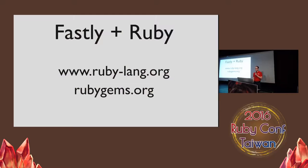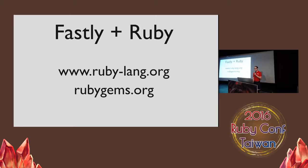Fastly supports many open source projects, including hosting the RubyLang website, downloads for Ruby, and all of your RubyGems. Last month, Fastly served 425 terabytes of data and 8 billion requests supporting RubyGems, all for free. I'd also like to highlight the work of David Radcliffe and the rest of the RubyGems.org team for speeding up gem downloads, especially for users outside of the United States. They'll be making a blog post about that real soon now.